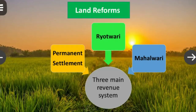Children, during the British rule, some land reforms were also done to get more profits. The three main revenue reforms were Permanent Settlement, Ryotwari, and Mahalwari. Let's discuss these land reforms in detail one by one.